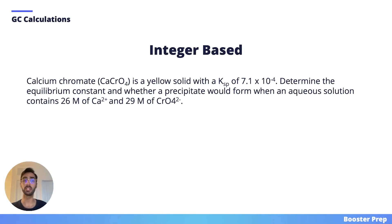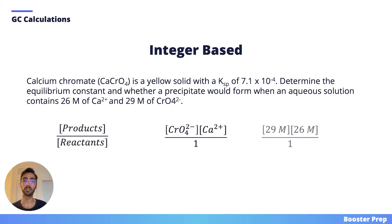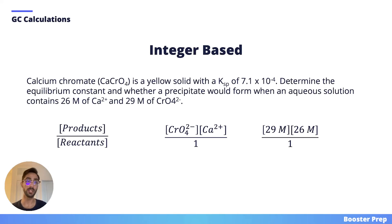For this question, we just have to calculate the equilibrium constant and see whether or not it is higher or lower than the solubility product constant given in the question. The equilibrium constant is the product of the product concentrations divided by the product of the reacting concentrations. So in this case, all we have to do is multiply 29 with 26.